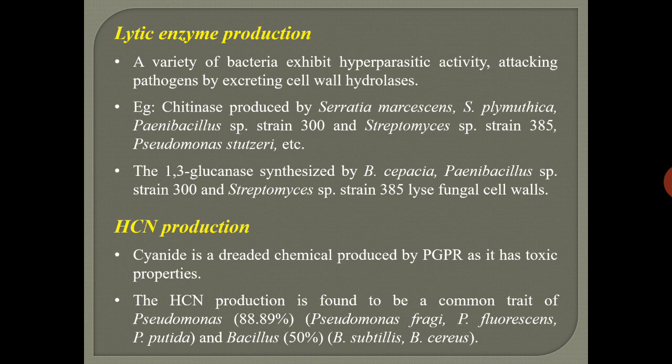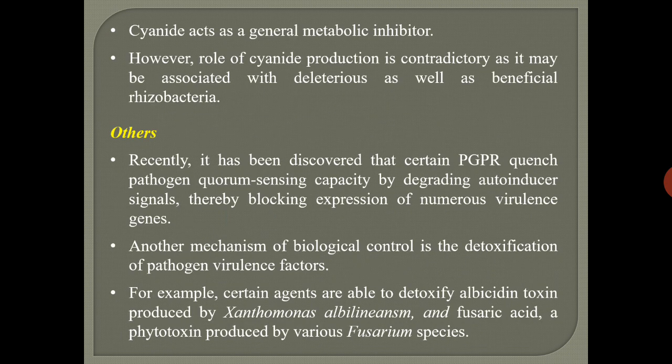HCN production — cyanide is a highly toxic chemical and PGPR can kill pathogens by producing it. Cyanide production is found to be a common trait of Pseudomonas — nearly 88.89 percent of known Pseudomonas strains can produce cyanide. About 50 percent of known Bacillus species are also known to produce cyanide. Major species include Pseudomonas fragi, Pseudomonas fluorescens, Pseudomonas putida, Bacillus subtilis, and Bacillus cereus.